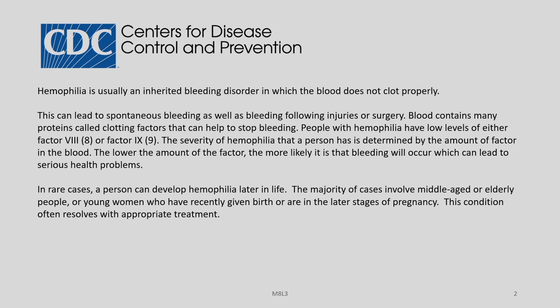The Center for Disease Control and Prevention describes Haemophilia as an inherited bleeding disorder in which the blood does not clot properly. Due to this non-clotting, patients can bleed from injuries or even during surgery. Blood contains many proteins called clotting factors that help stop bleeding. People with Haemophilia have low levels of either factor 8 or factor 9, and the severity is determined by the amount of factor in the blood. The lower the amount, the more likely bleeding will occur, leading to serious health problems.